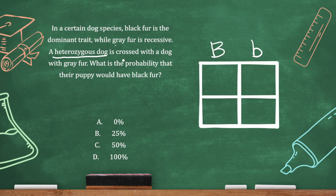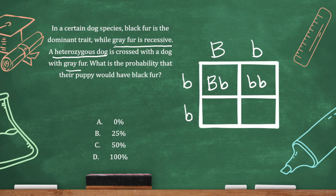Now it's crossed with a dog with gray fur. Since gray fur is recessive, for that trait to be expressed both alleles need to be recessive, so both B's will be little b. Now we're ready to complete the Punnett square: big B / little b, little B / little b, big B / little b, little b / little b.